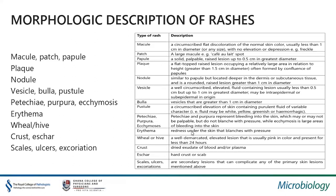A vesicle is a circumscribed elevated fluid-containing lesion, usually less than 0.5 centimeters, located intraepidermally or subepidermally. A bulla is a large vesicle, usually greater than one centimeter in diameter. A pustule is a circumscribed elevation of skin containing purulent fluid of variable character — it could be whitish, greenish, yellowish, or hemorrhagic. Petechiae, purpura, and ecchymosis describe bleeding under the skin, differing in size. They usually do not blanch, because it's extravasated blood into the tissue. Ecchymosis is a large area of bleeding under the skin.